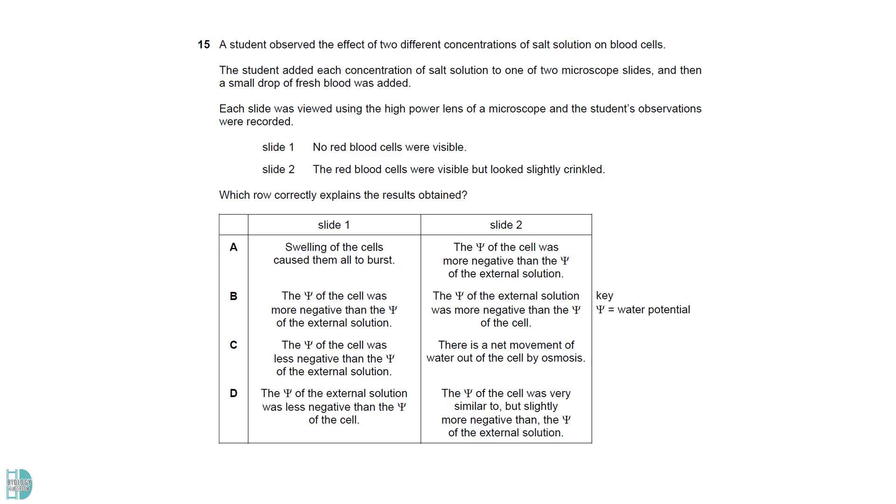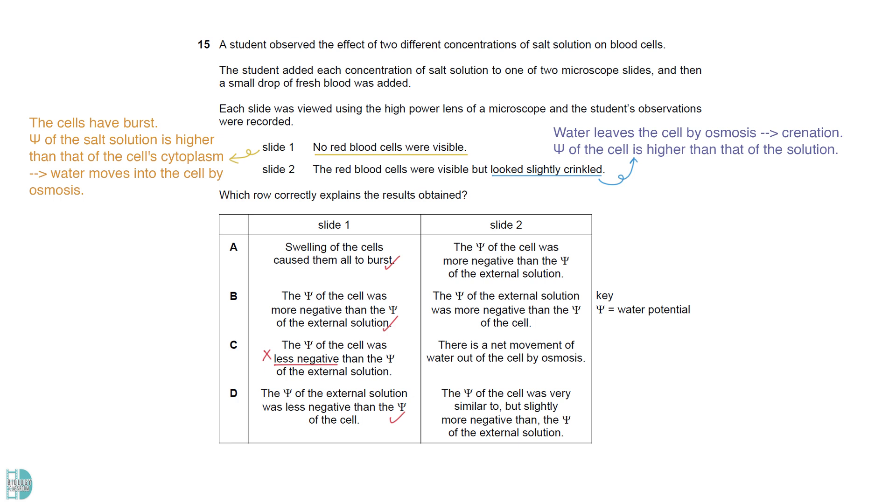Slide 1 indicates that the cells have burst. This means the water potential of the salt solution is higher than that of the cell cytoplasm, leading to water moving into the cell by osmosis. So, C is incorrect. In slide 2, water leaves the cell by osmosis, causing them to be crenated. This indicates that the water potential of the cell is higher than that of the solution. Only B describes this correctly.